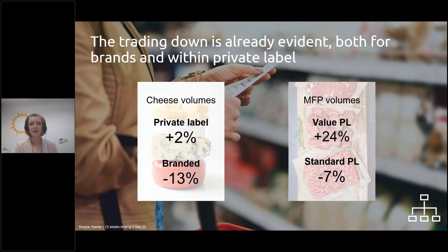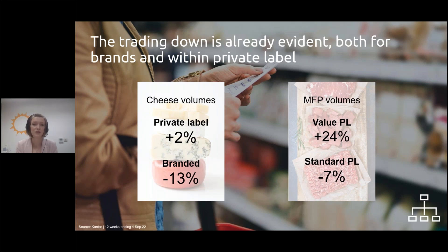Firstly, that movement down between tiers, either within private label or from brands to private label itself. To illustrate this, we have the performance of cheese on the left-hand side. Brands account for just over a quarter of all volumes, but this share has dropped by just over three percentage points versus a year ago, with brands down 13% in volumes and private label up 2%. Within dairy, yogurt is also a very heavily branded category, accounting for just over 58% of volumes, and we see a similar trend with brands declining faster than private label.